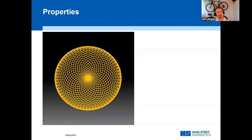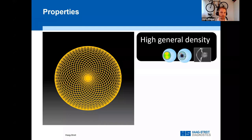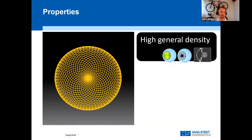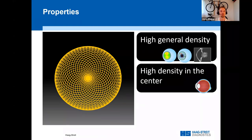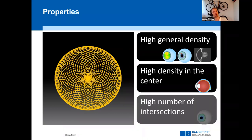The resulting Mandalay scan has the following positive properties: it features a high scanning density, which has a positive effect for topography, simulated keratometry, and imaging. It has an increased density in the center, which has a positive effect on biometry. In addition, its trajectory has a high number of intersections, which allow for high-resolution motion compensation in three dimensions. This motion compensation has a positive effect on all OCT-based measurements.